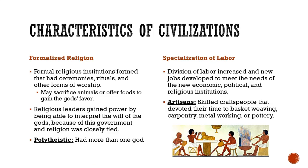Formal religious institutions also formed, with ceremonies, rituals, and other forms of worship. Many of them sacrificed animals or offered food to gain the gods' favor. Different religions also developed during this time period. Religious leaders gained power by being able to interpret the will of the gods, because government and religion were closely tied. Many of the religions then were polytheistic, meaning they had more than one god — poly means many.